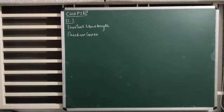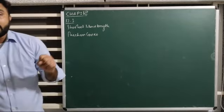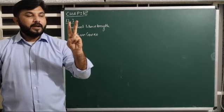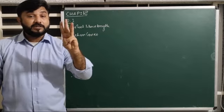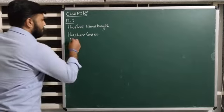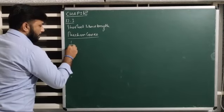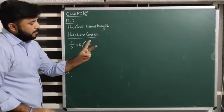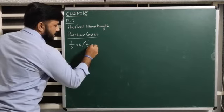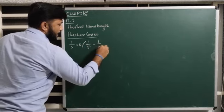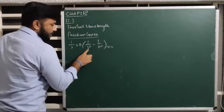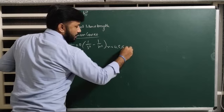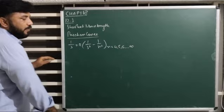If it is a Paschen series, then we know that in Paschen series, 1 upon lambda is equal to R times 1 upon 3 square minus 1 upon n square, and n value starting from 4, 5, 6, and so on, up to infinite.